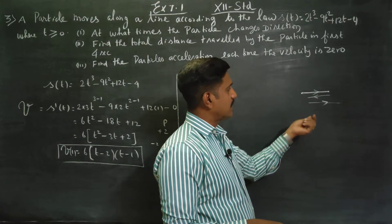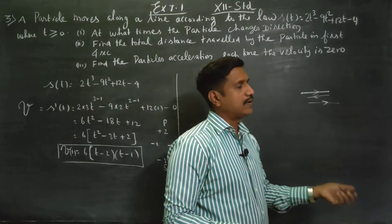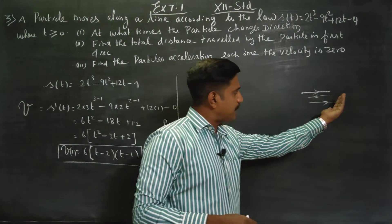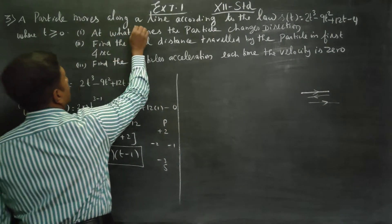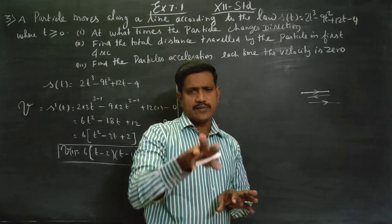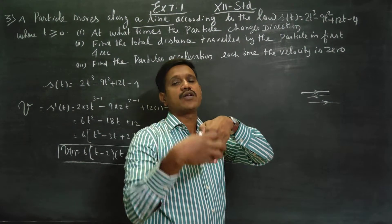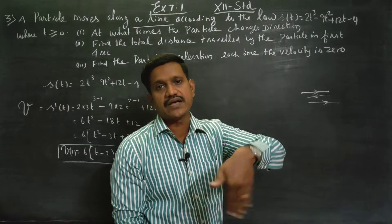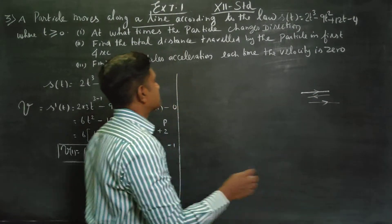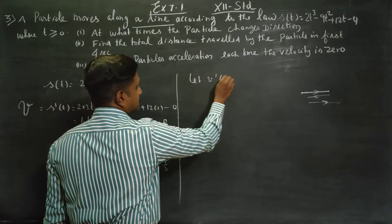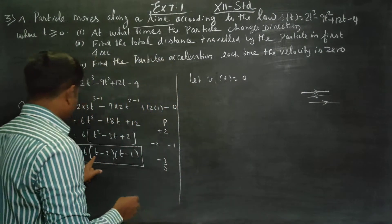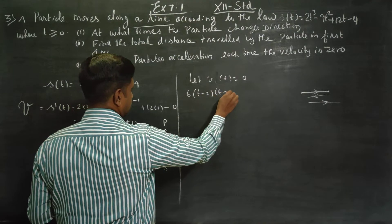If you want to stop and move again, you have to stop and then move again. For direction to change while moving along a line — for example, consider cricket bowling: a straight ball goes straight down. The ball's velocity becomes zero at the point of change. So for a straight line, let velocity v(t) equal zero.